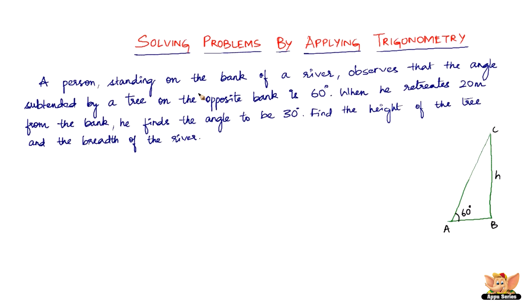What happens next is, a person standing on the bank observes the angle of 60 degrees. Let the person be at point A. When he retreats 20 meters from the bank, he comes back something like this. From A, let's say he's come back to D. Let this point be D.